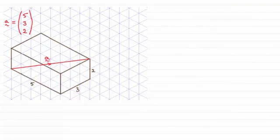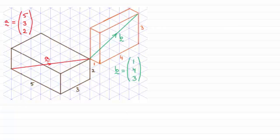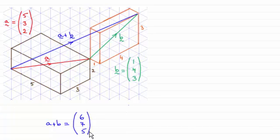When it comes to working with vectors in three dimensions, it's much the same. Suppose we have vector a as the column vector (5, 3, 2). If we add vector b with column vector (1, 4, 3) — one across, four in this direction, three up — then doing a followed by b, a plus b, we get the result (6, 7, 5), which you can verify by counting the squares: six across, seven in this direction, and five up.